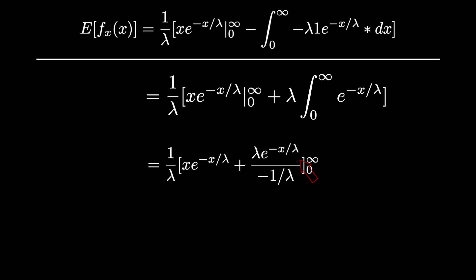In this case our integral is going to be lambda times e to the negative x over lambda divided by the derivative of negative x over lambda, which is negative 1 over lambda.